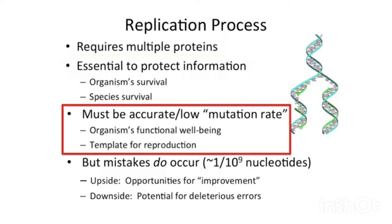It's also important for species survival, because this DNA is the genetic information passed on to successive generations. To protect the information in the DNA, the replication must be accurate — that is, as it's replicated, there must be a very low rate of change in the sequence of bases. Another way to say that is to have a low mutation rate. This is important because changes in the DNA can impact the function of the encoded proteins and, therefore, the well-being of the organism.